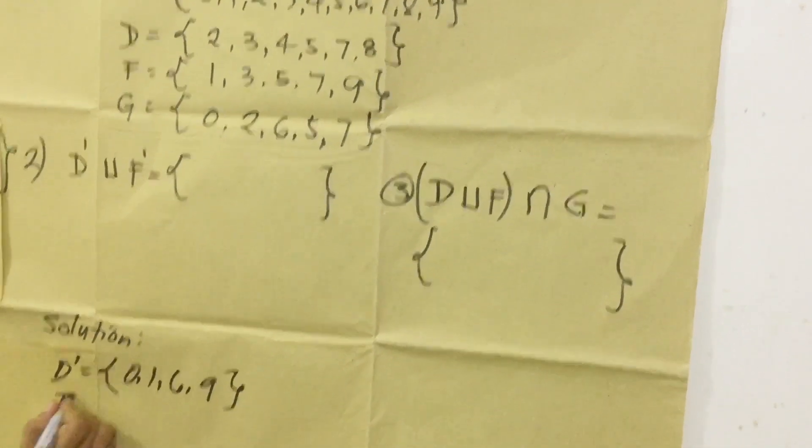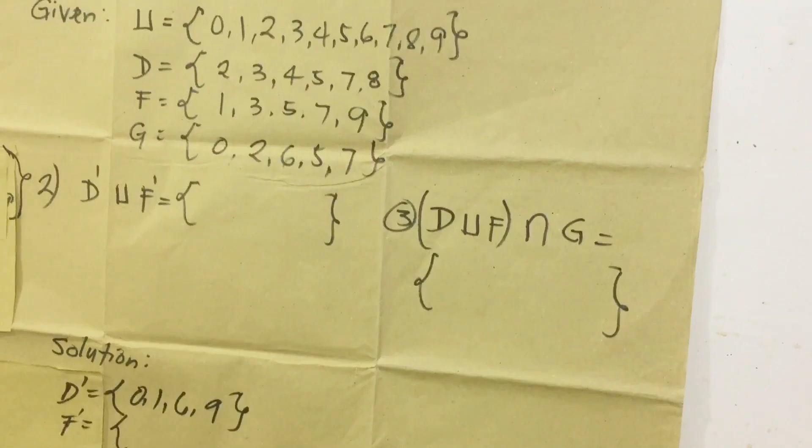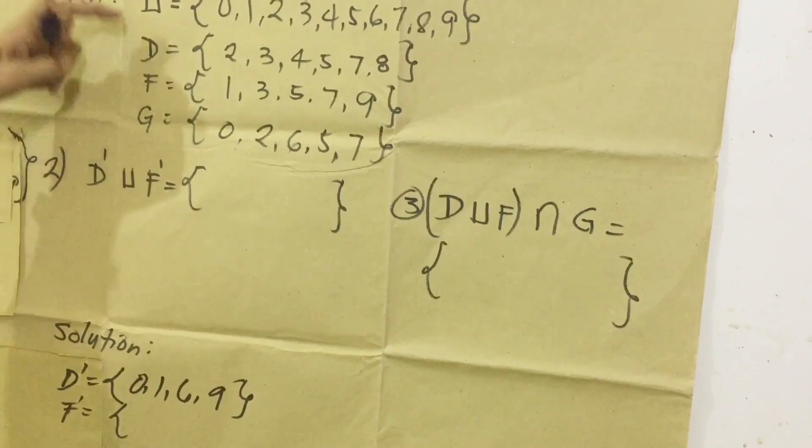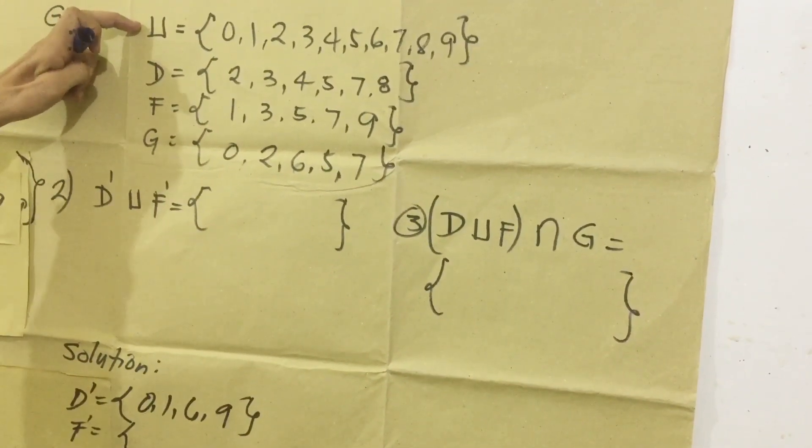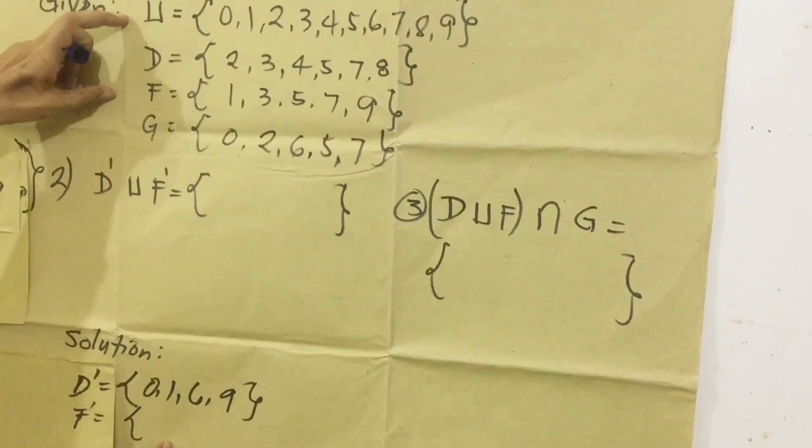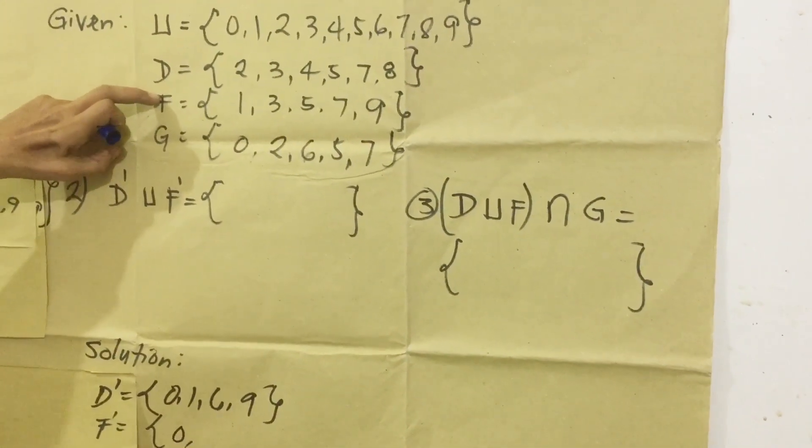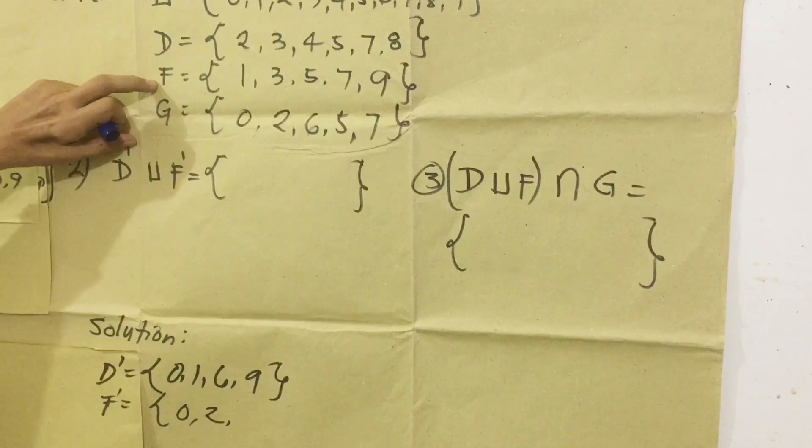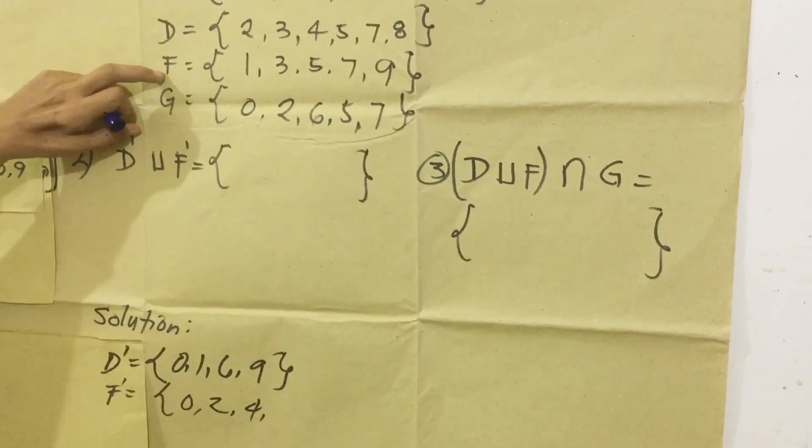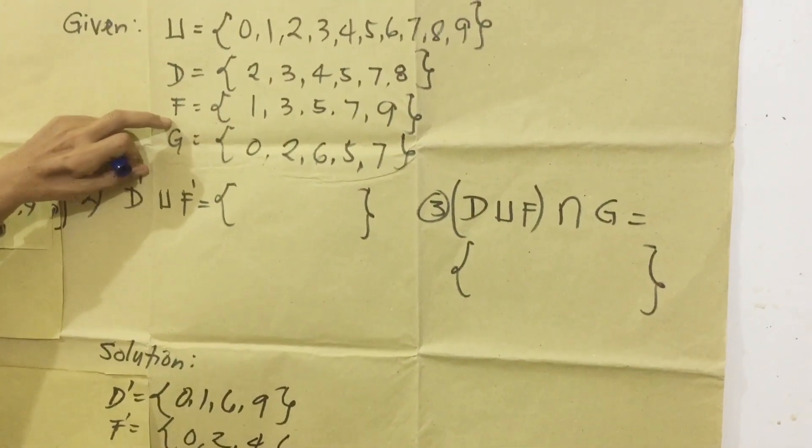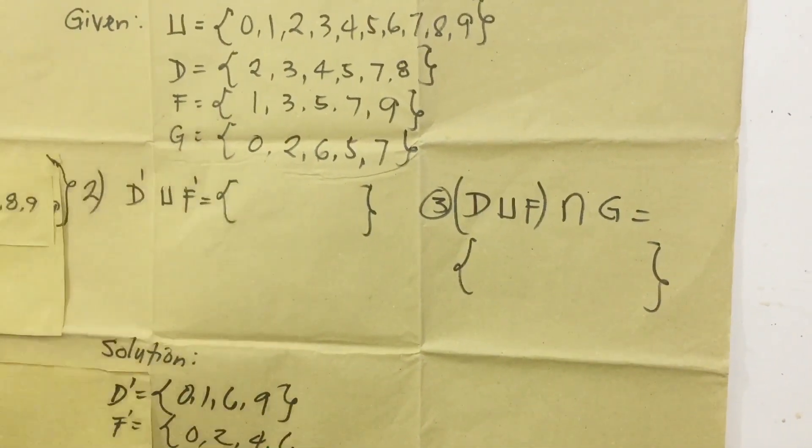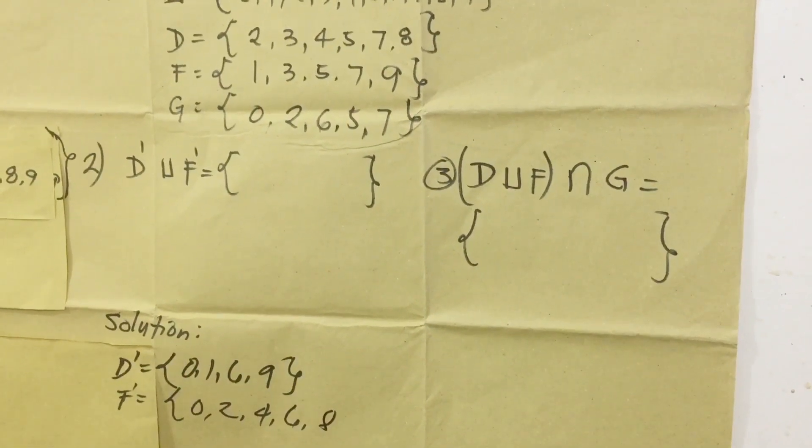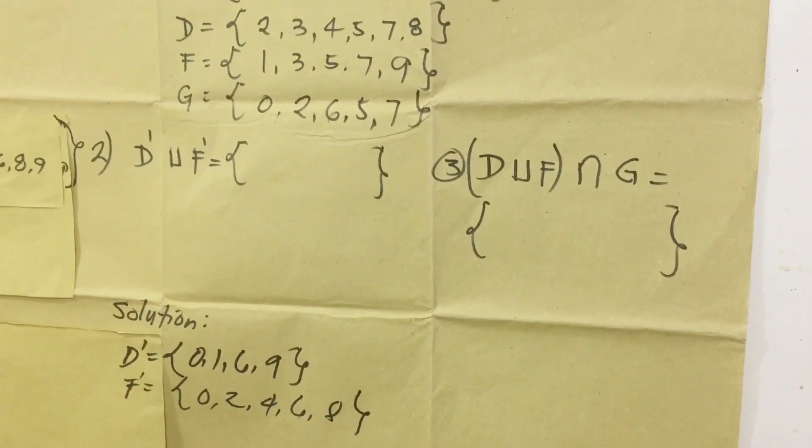Next, ay complement ng F. Ang complement ng F is 1. Ang F muna kunin natin ay 1, 3, 5, 7, 9. Babalik tayo sa universal rudder. Ang wala ay record natin dito. 0 wala, 1, 2 wala. 2. 3 meron, 4 wala. 5 meron, 6 wala. 7 meron, 8 wala. 8, then 9 meron. Ito lang yung complement ng F.